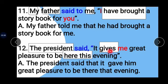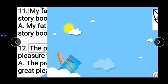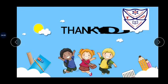Example 12: The president said, 'It gives me great pleasure to be here this evening.' The president is the speaker; 'said' is in past tense. 'Gives' changes to 'gave,' 'me' changes to 'him,' 'here' changes to 'there,' and 'this evening' changes to 'that evening.' Answer: The president said that it gave him great pleasure to be there that evening. I hope you have understood this exercise clearly. Thank you!